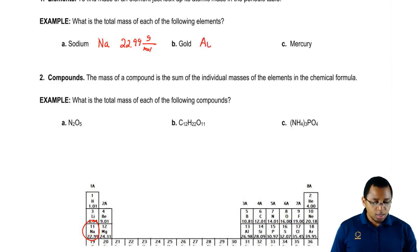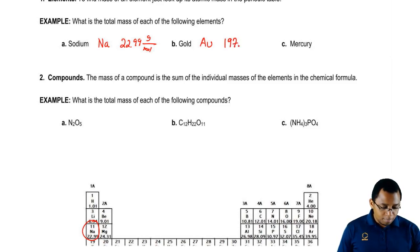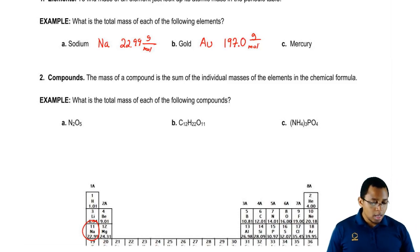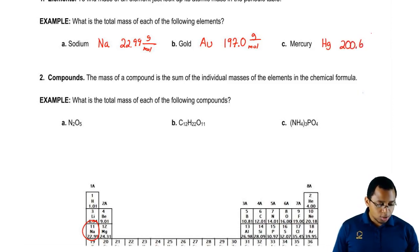Gold is Au. We just look that up on the periodic table and it's going to be 197.0 grams per mole. So for every 1 mole of gold, there is 197 grams of gold. Finally, we have mercury which is Hg and that would be 200.6 grams per mole.